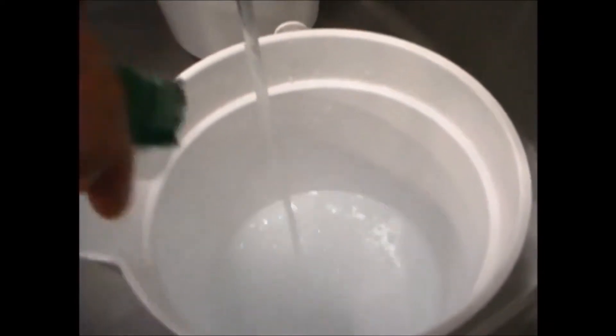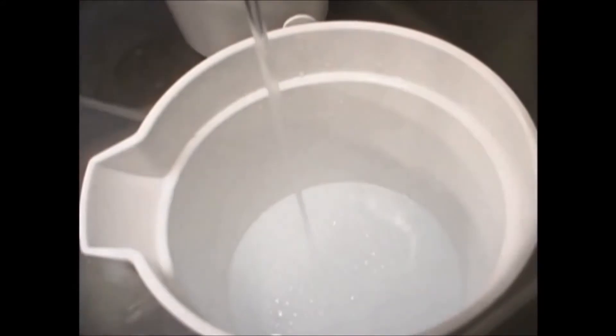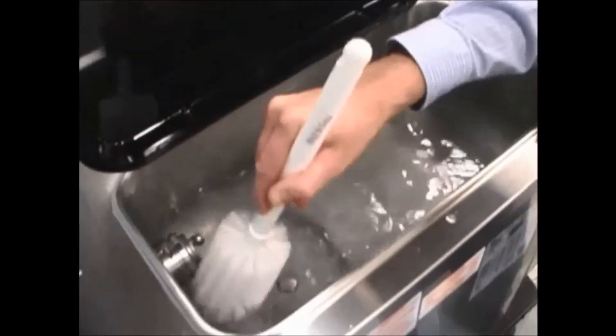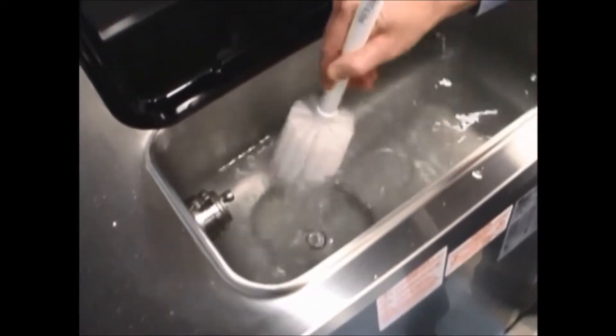To clean the hopper, mix two gallons of warm water with an approved cleaning solution. With the prime plug pushed down, pour the solution into the hopper. Allow the solution to flow into the freezing cylinder. Using the white hopper brush, clean the mix hopper and the mix level sensing probes.